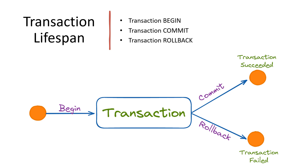Next, we have transaction rollback. In the event of an error or any unexpected condition within the transaction, a rollback operation is invoked. This action undoes all the changes made within the transaction, reverting the database to its previous state before the transaction began, ensuring data integrity and restoring consistency. It's important to note that if a transaction ends unexpectedly — such as due to a system crash or failure — the default behavior is to automatically initiate a rollback operation. This safeguards the data from being left in an inconsistent or incomplete state.